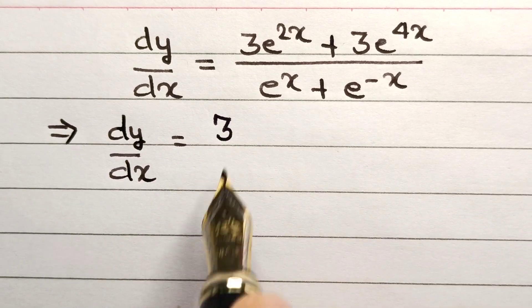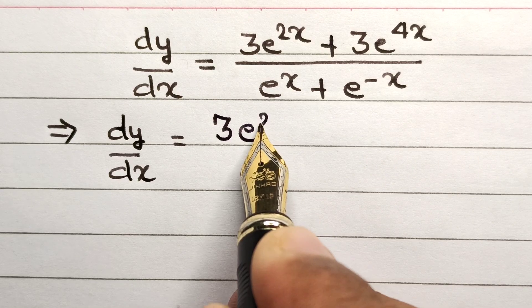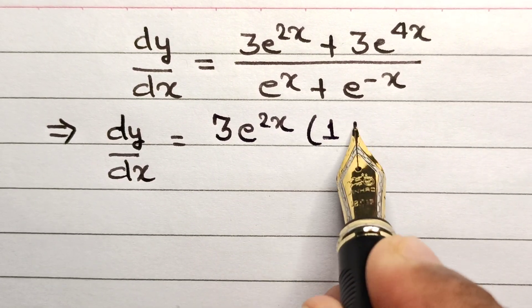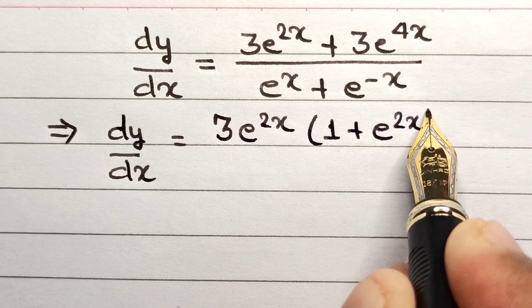As you can see from the numerator, I can take 3 common and e^(2x) common as well. So inside the bracket we will have 1 plus e^(2x).